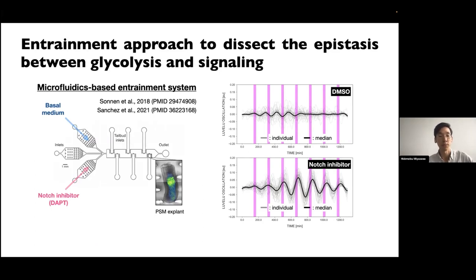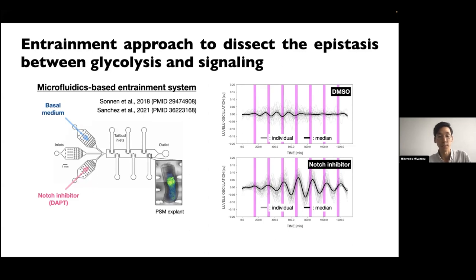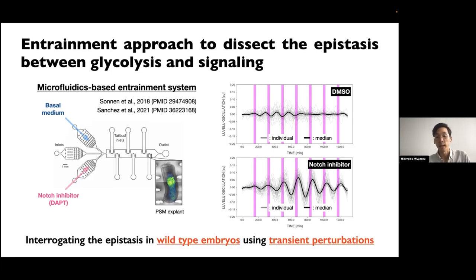Normally the segmentation clocks are not in sync between embryos — if you plot the median value of the Notch signaling reporter across embryos over time you get a flat line. But if you apply a signaling modulator like a Notch inhibitor in a periodic fashion, you can synchronize the segmentation clock between embryos, visible in the median plot. My question was whether periodic perturbation of glycolysis can function as a signaling modulator to synchronize clock oscillation. This system is elegant because we can interrogate epistasis between metabolism and signaling in wild type embryos using transient rather than chronic metabolic perturbations.